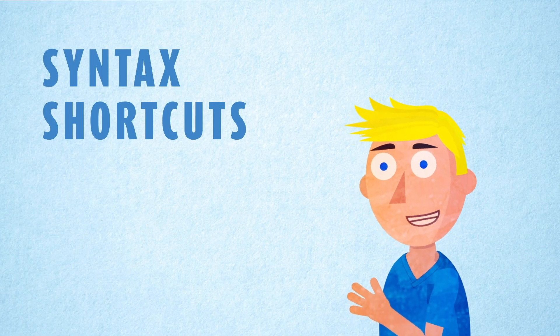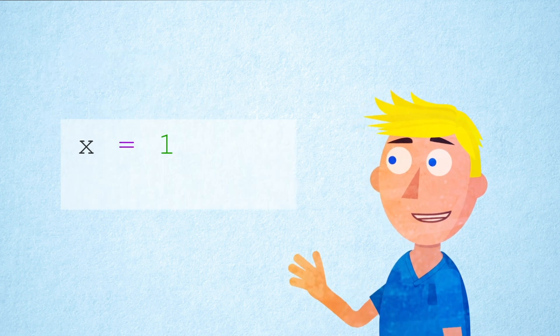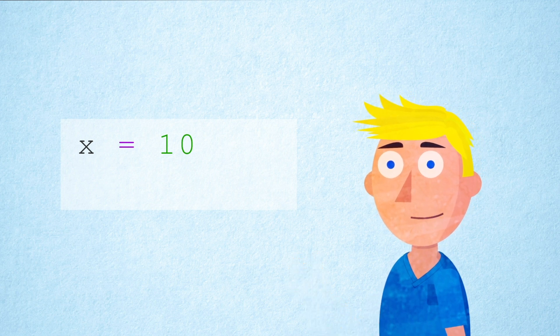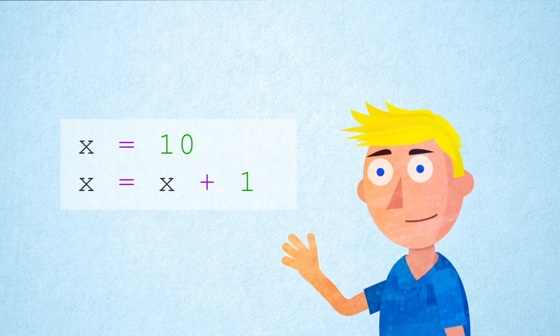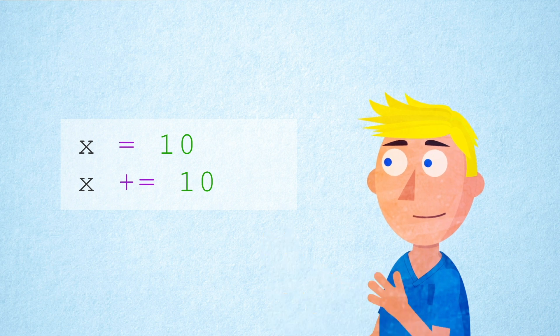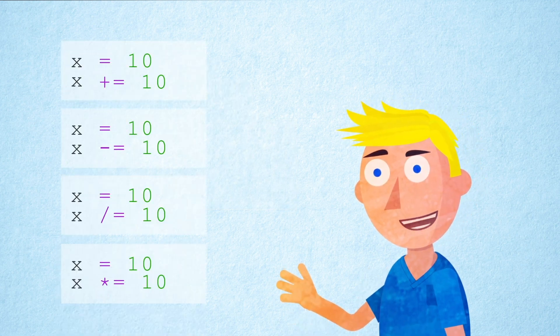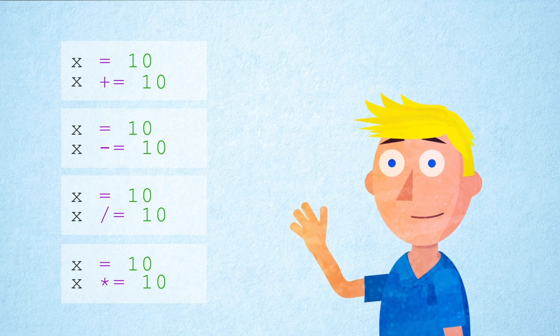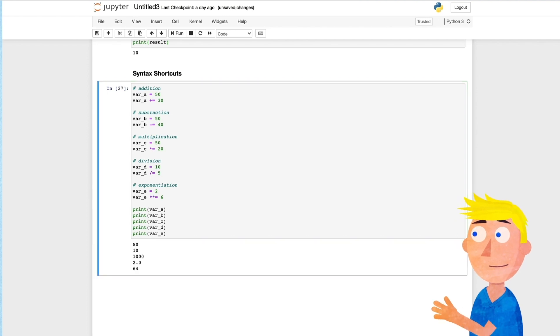Next let's talk about syntax shortcuts. Syntax shortcuts are just a shorthand for performing operations when updating variables. Say we have a variable x that equals 10. Now I want to add 10 to that number. We could write it out as x equals x plus 10 but there is a shorthand way of doing this. Instead of writing it out in full I could simply write x plus equals 10. This means exactly the same but uses a shorthand operator instead of writing out the whole equation. There are shorthand operators for all the basic arithmetic operators and they follow the same pattern. Let's try them out in our Jupyter notebook.